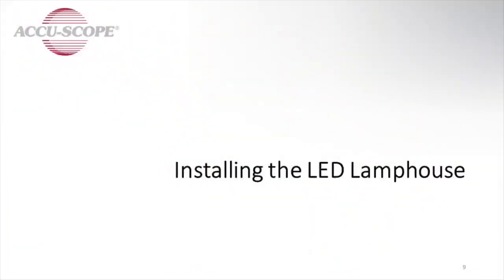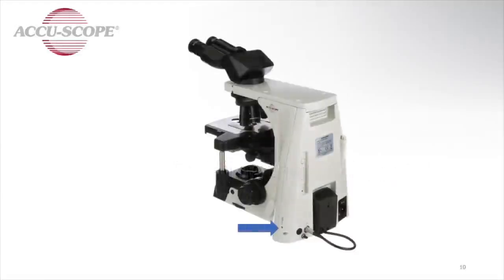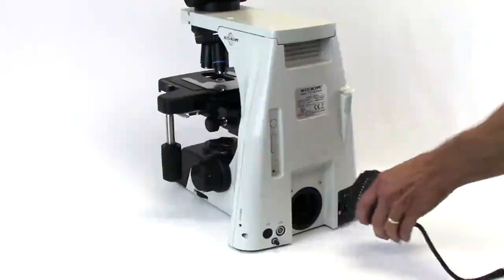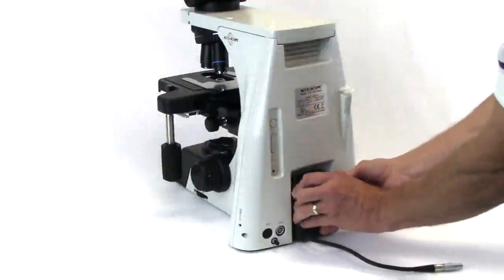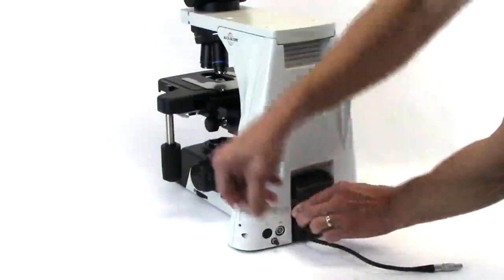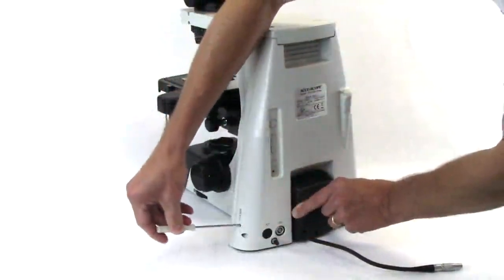Installing the LED lamp house. Using the hex wrench, loosen the LED lamp house lock screw as indicated by the blue arrow. Align and install the lamp house with the opening in the back of the stand. Gentle wiggling of the lamp house may help it insert completely. Retighten the lock screw.